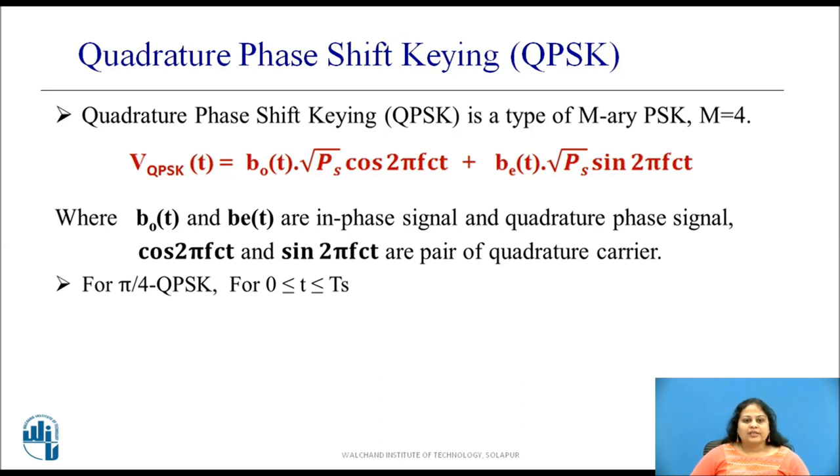We know that QPSK is a type of M-ary PSK where M is equal to 4. This signal is represented with the expression as shown. VQPSK of t equals BO of t root of ps cos 2 pi fct plus BE of t root of ps sin of 2 pi fct where BO of t and BE of t are in phase signal and quadrature phase signal and cos of 2 pi fct and sin 2 pi fct are pair of quadrature carriers used for modulation.